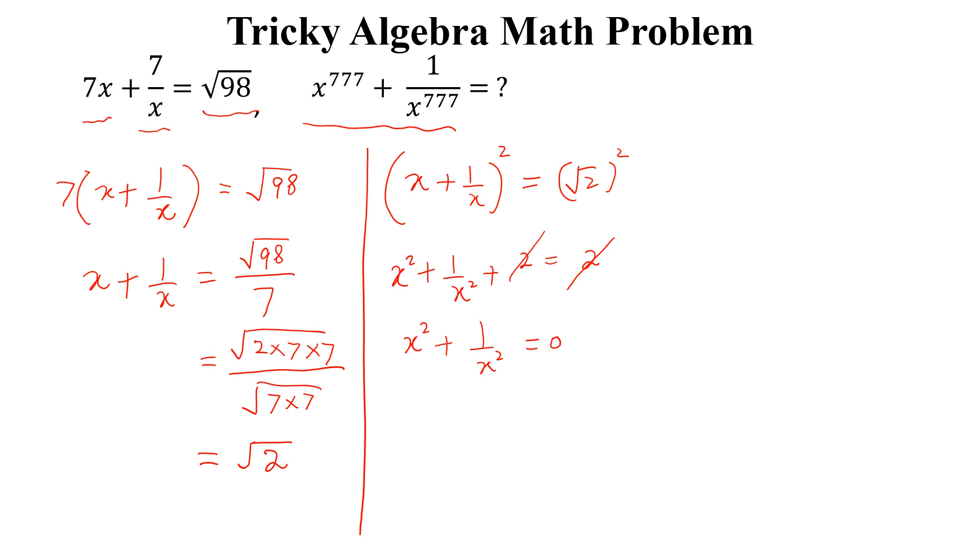Multiplying both sides by x square, we get x to the power 4 plus 1 equal to 0. So x to the power 4 equal to minus 1.